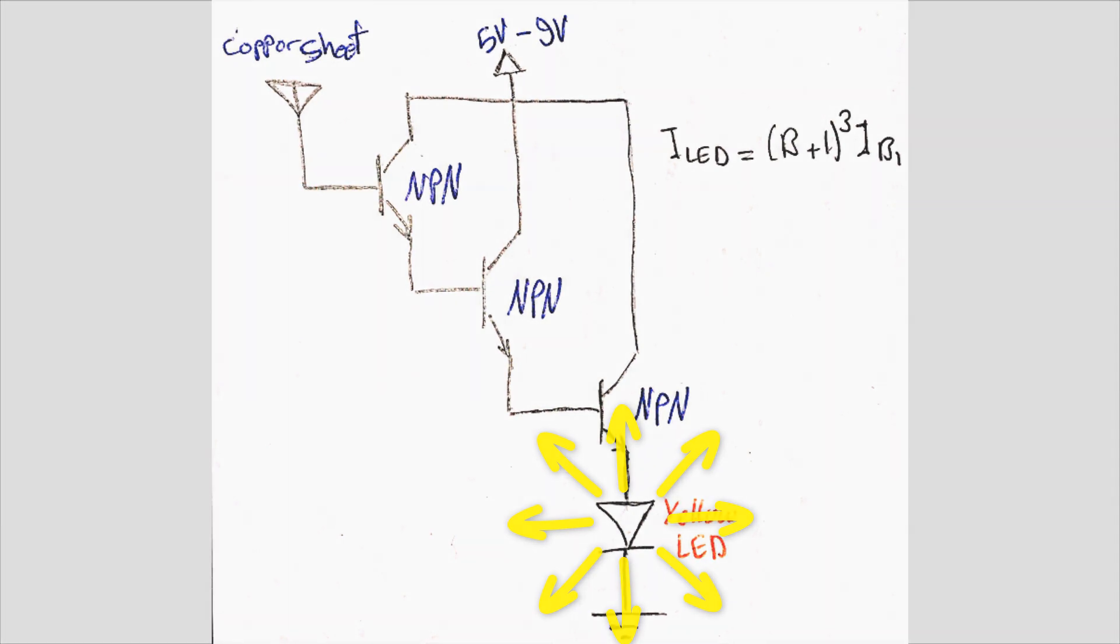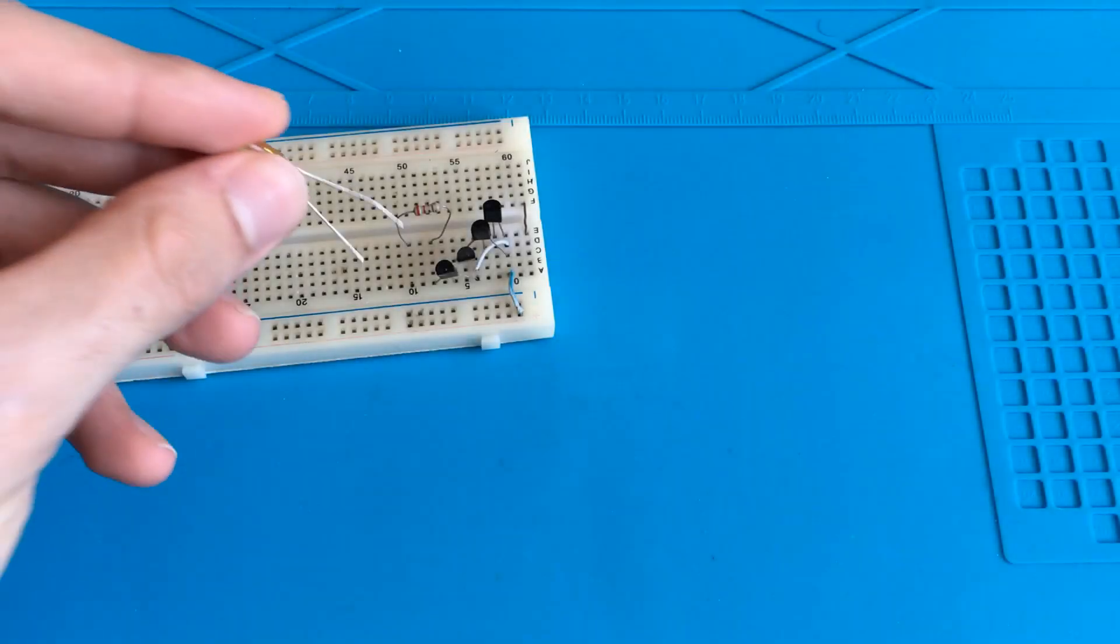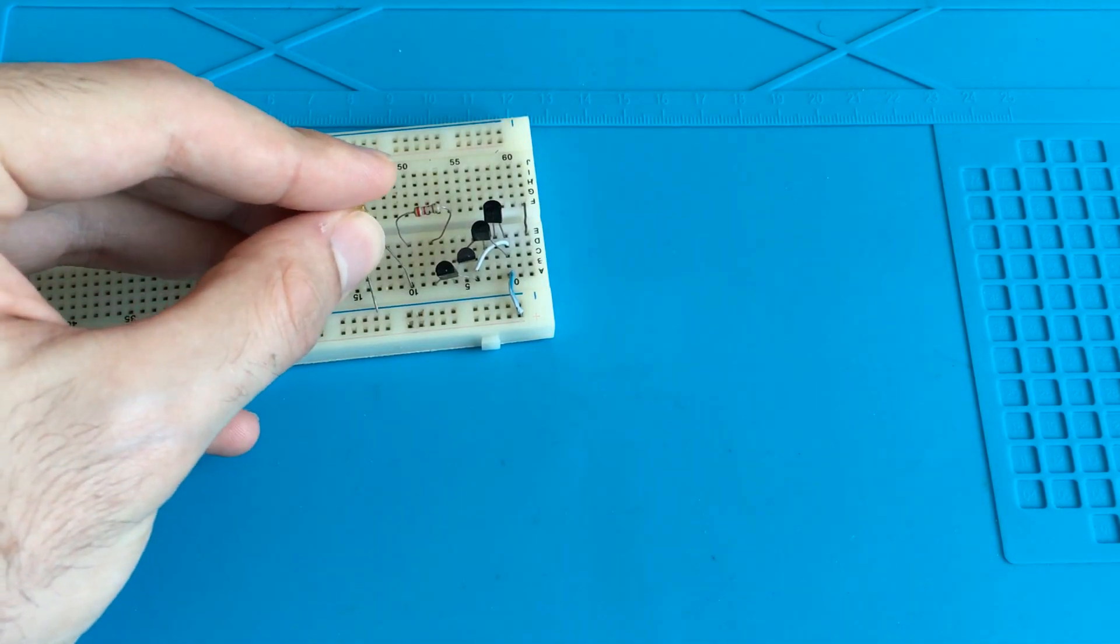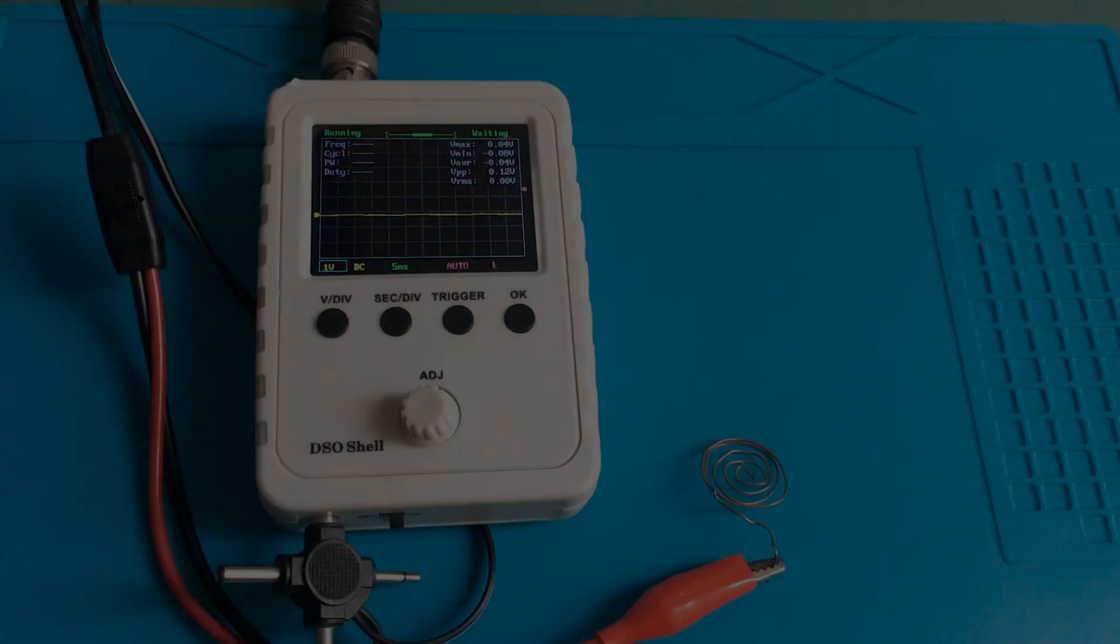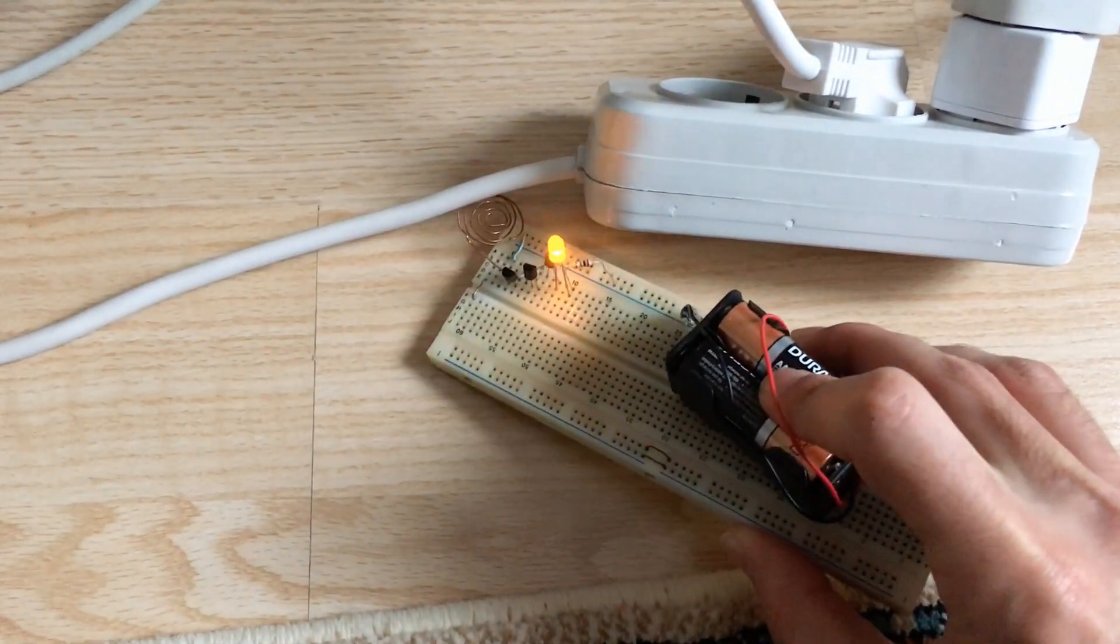For the sake of testing this circuit, I built it up on a breadboard and used even four stages of NPN transistor. I also made up some sort of an antenna using a copper wire connected it to the transistor base. And here's the result.